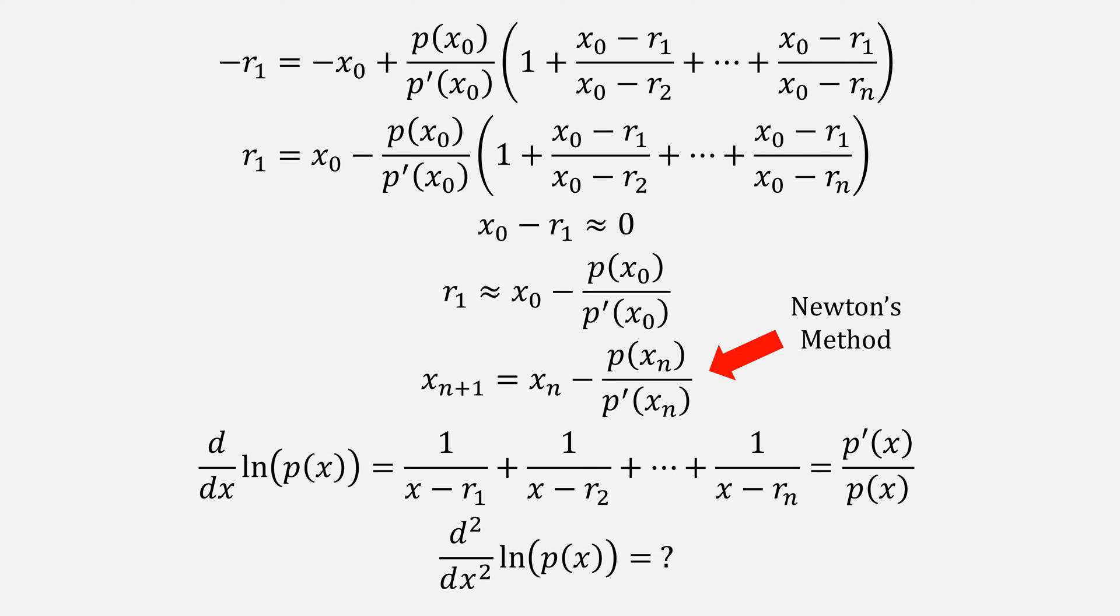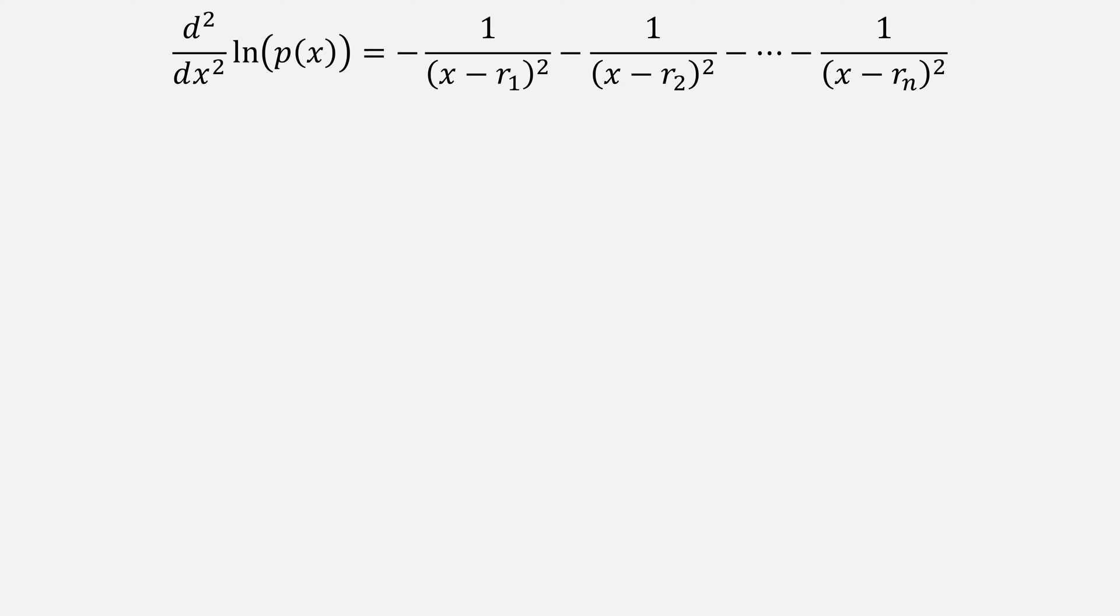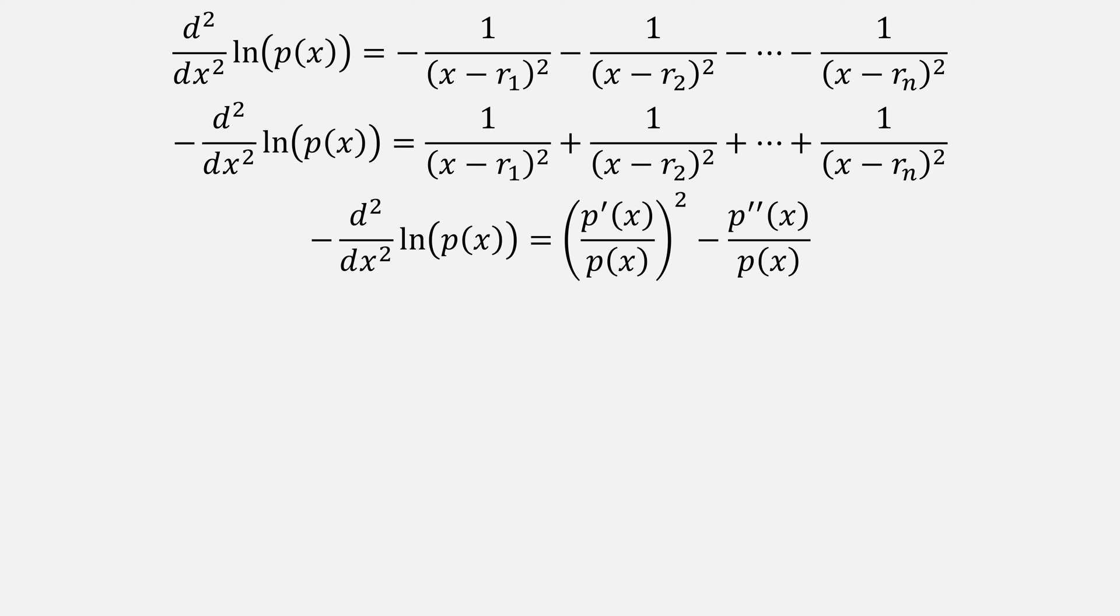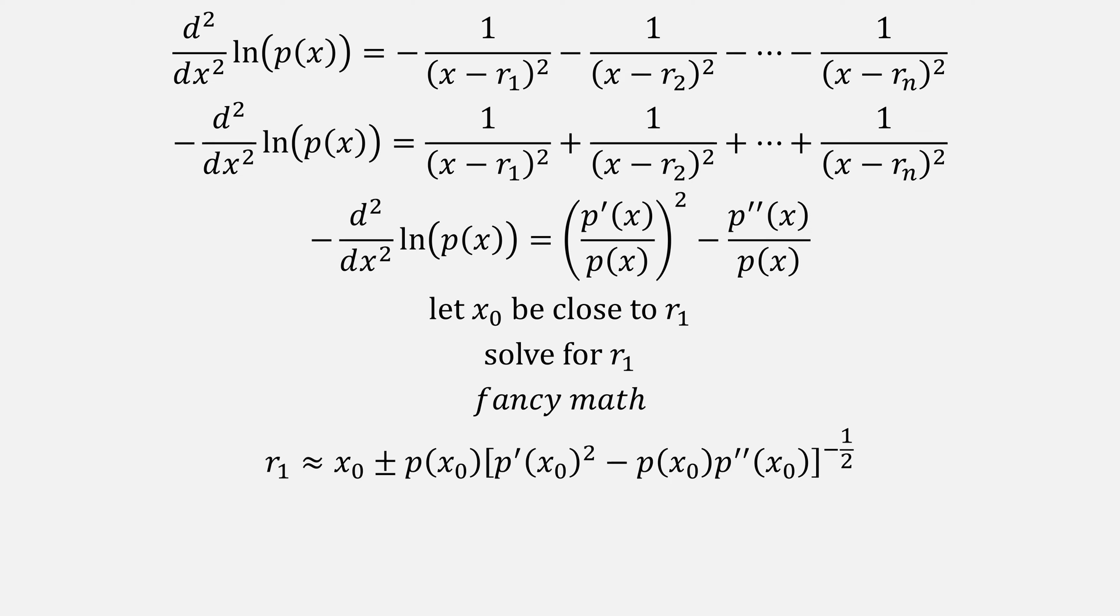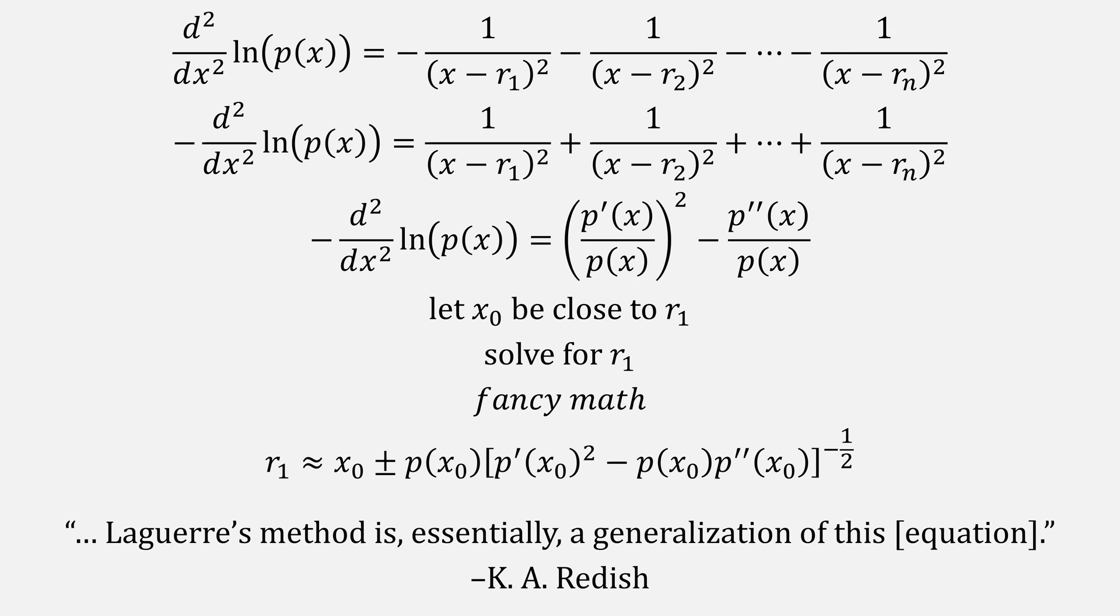What if we took the second derivative? I'll spare you the steps and let you know that the second derivative of the natural log of p is equal to this expression, which actually isn't that useful to us unless we multiply both sides by minus 1, giving us this summation, which is actually also equal to this expression. You can try the math out yourself to see that this works. If we apply the same process of letting x0 be close to r1 and solving for r1, with some fancy math, we can come up with this general expression. Laguerre's method is essentially a generalization of this equation.